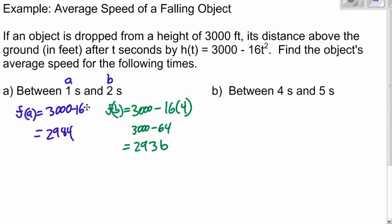So now plugging into our equation f of b minus f of a over b minus a. 2,936 minus 2,984 over 2 minus 1. So that is negative 48 over 1, just negative 48.